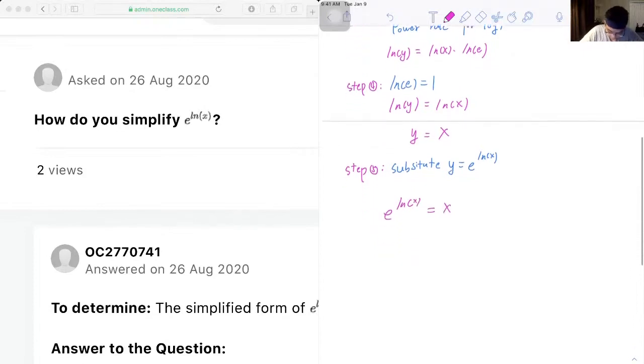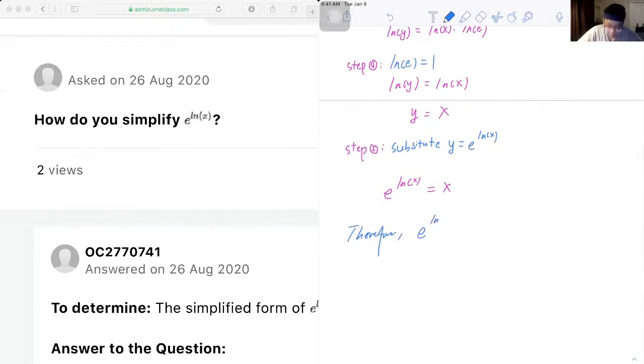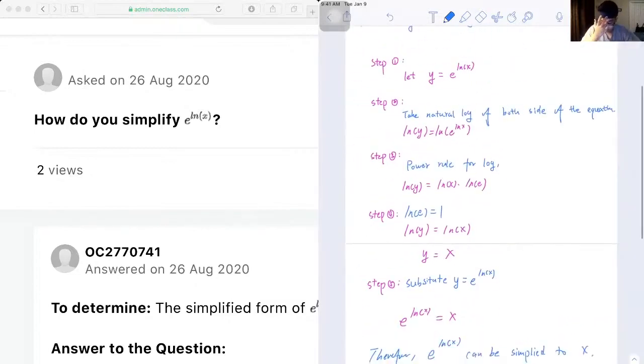Okay, so therefore, we can write our conclusion. Therefore, e to the exponent of log x can be simplified to x. That's all we get for this question.